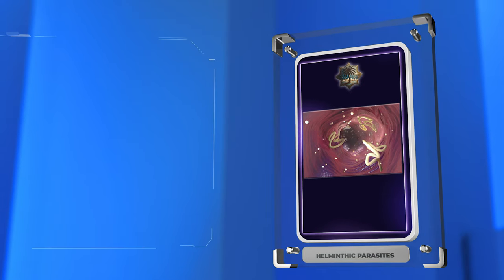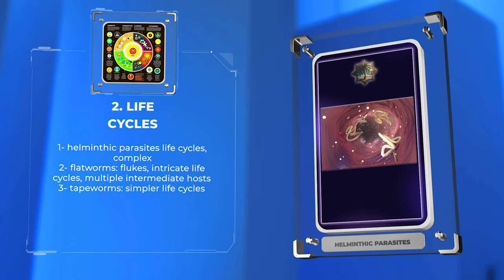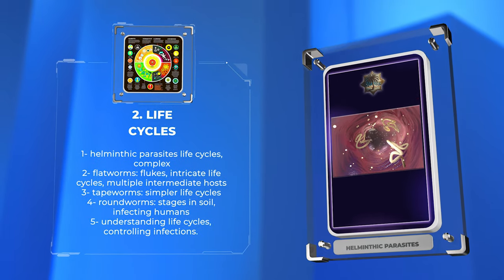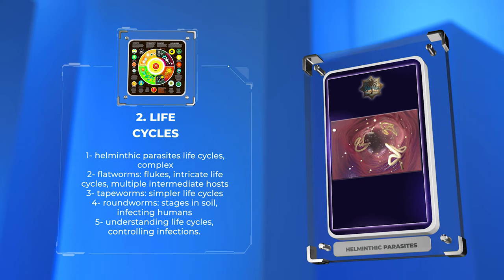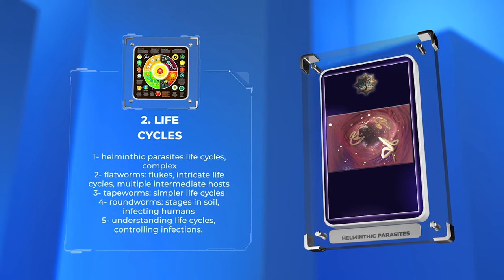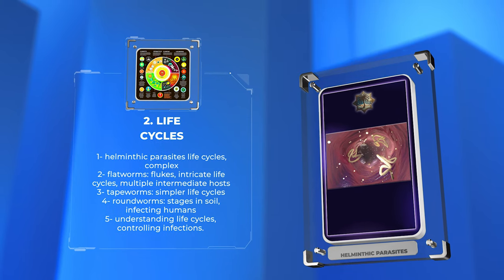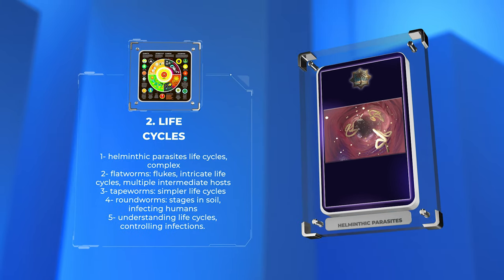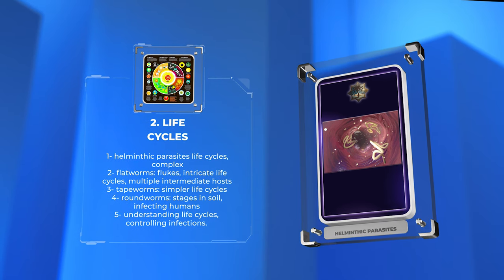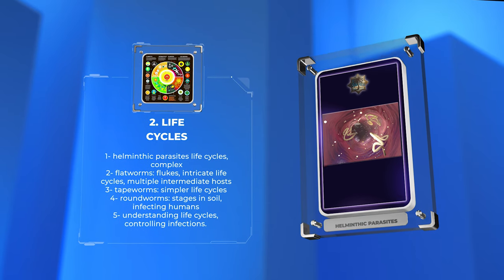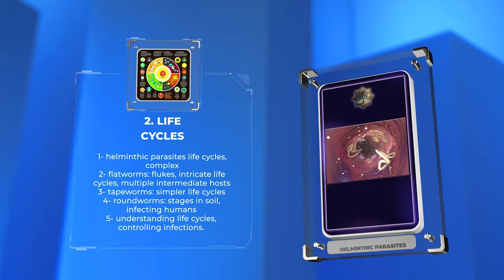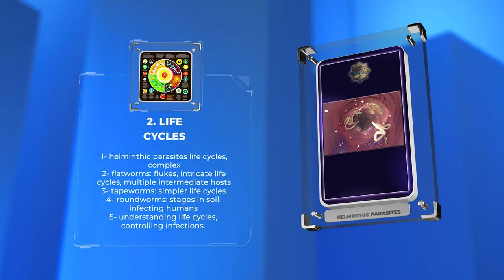The life cycles of helminthic parasites are complex, involving different stages and hosts. In flatworms, flukes have intricate life cycles with multiple intermediate hosts, while tapeworms have simpler life cycles. Roundworms go through stages in soil before infecting humans. Understanding these life cycles is important for controlling infections.